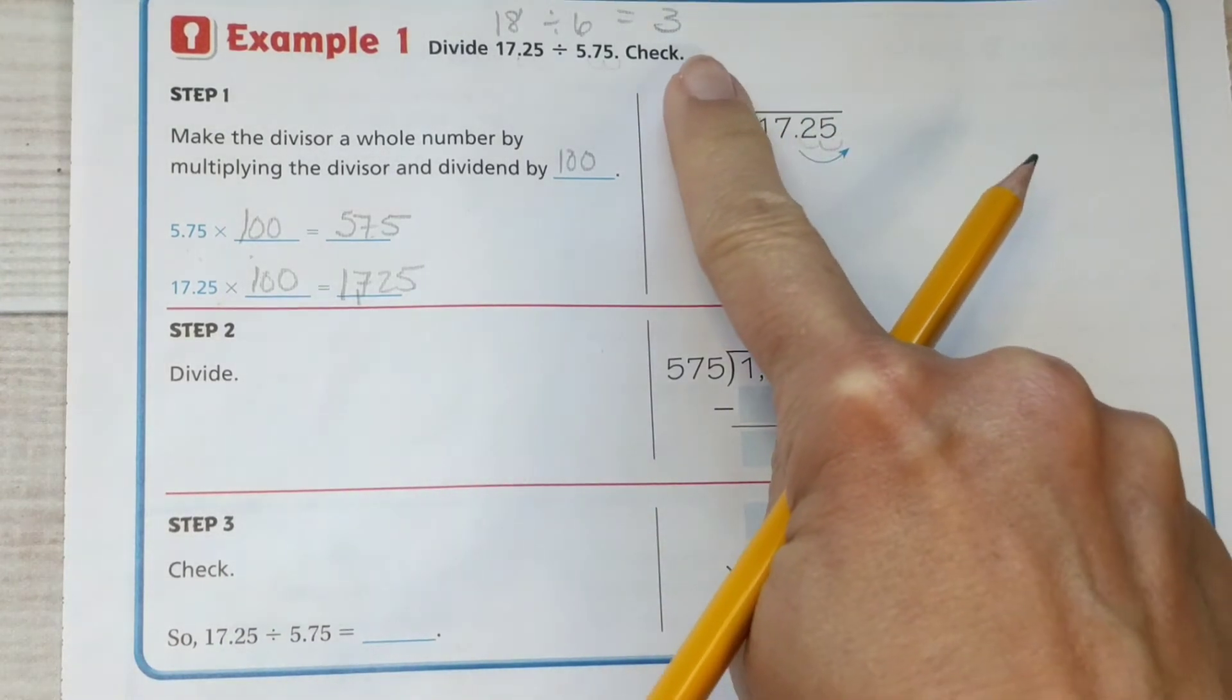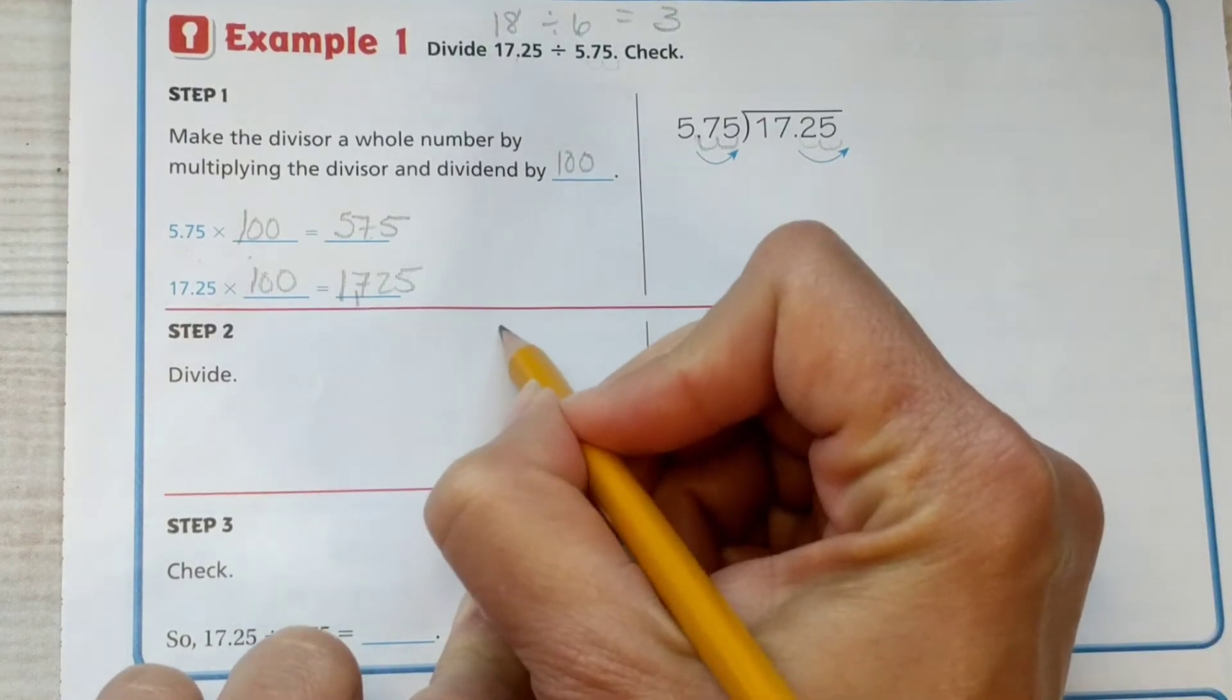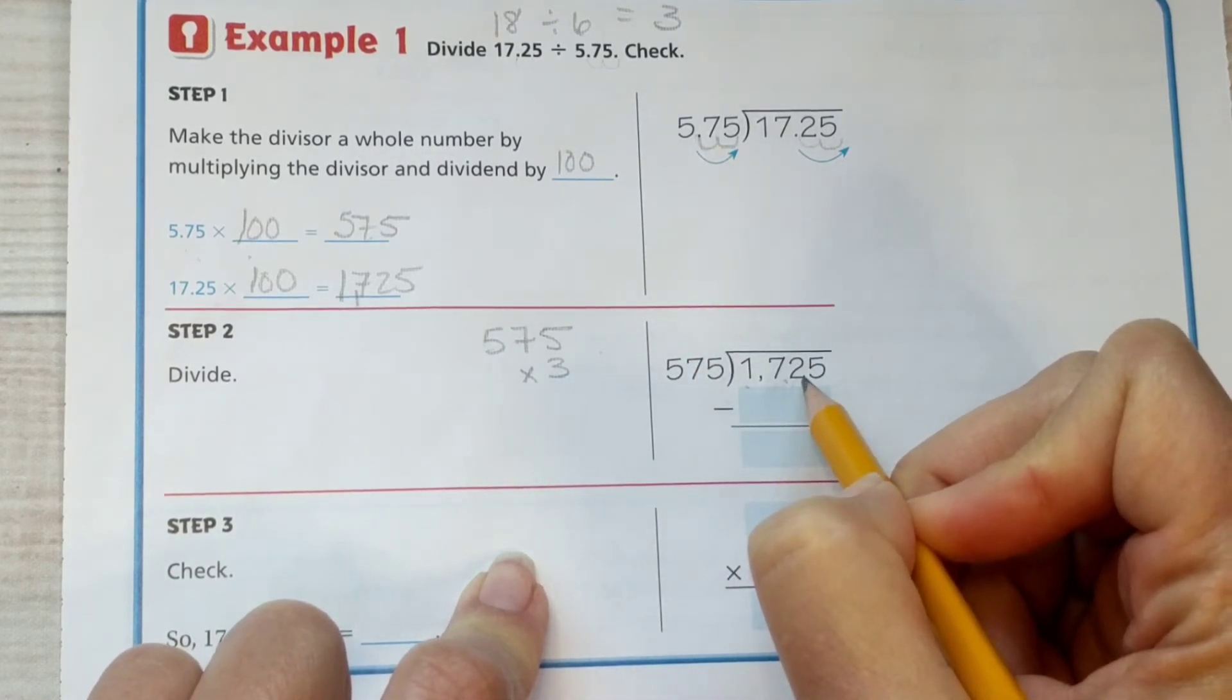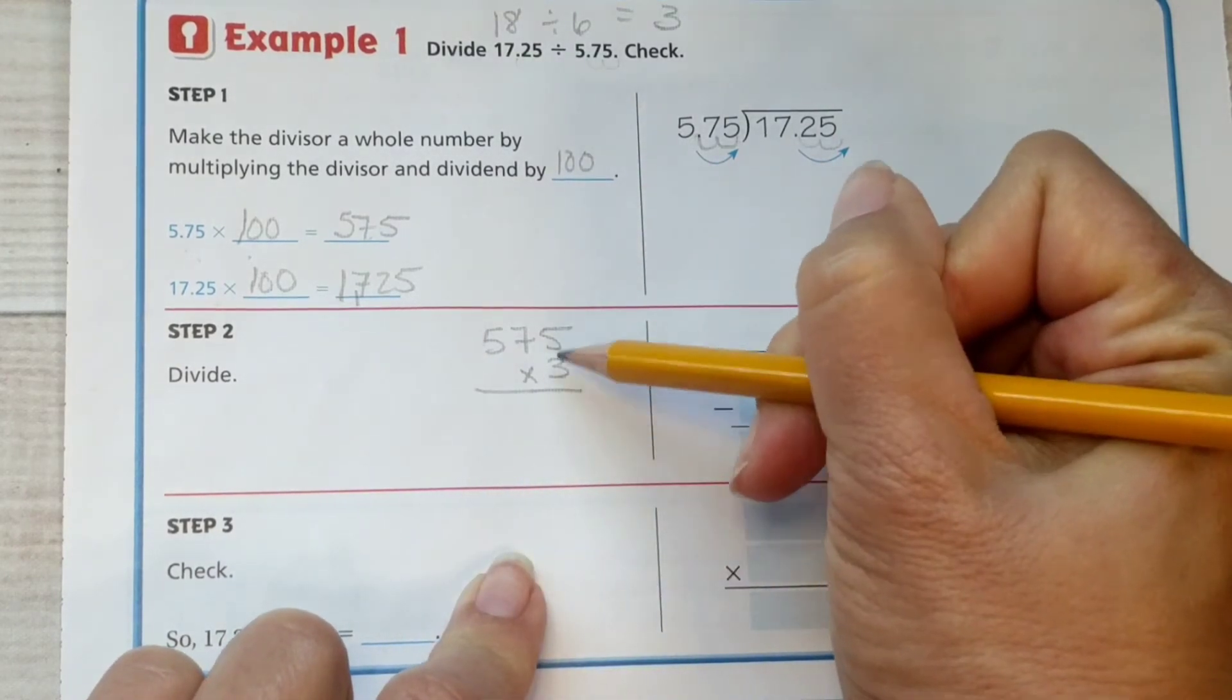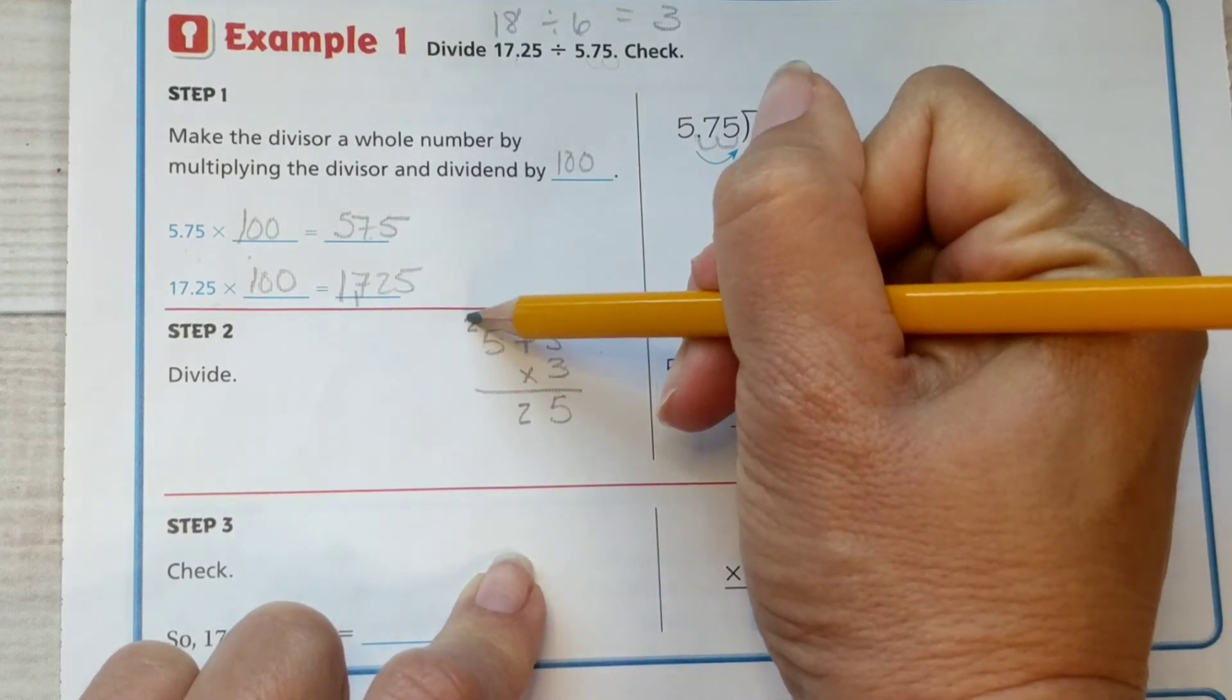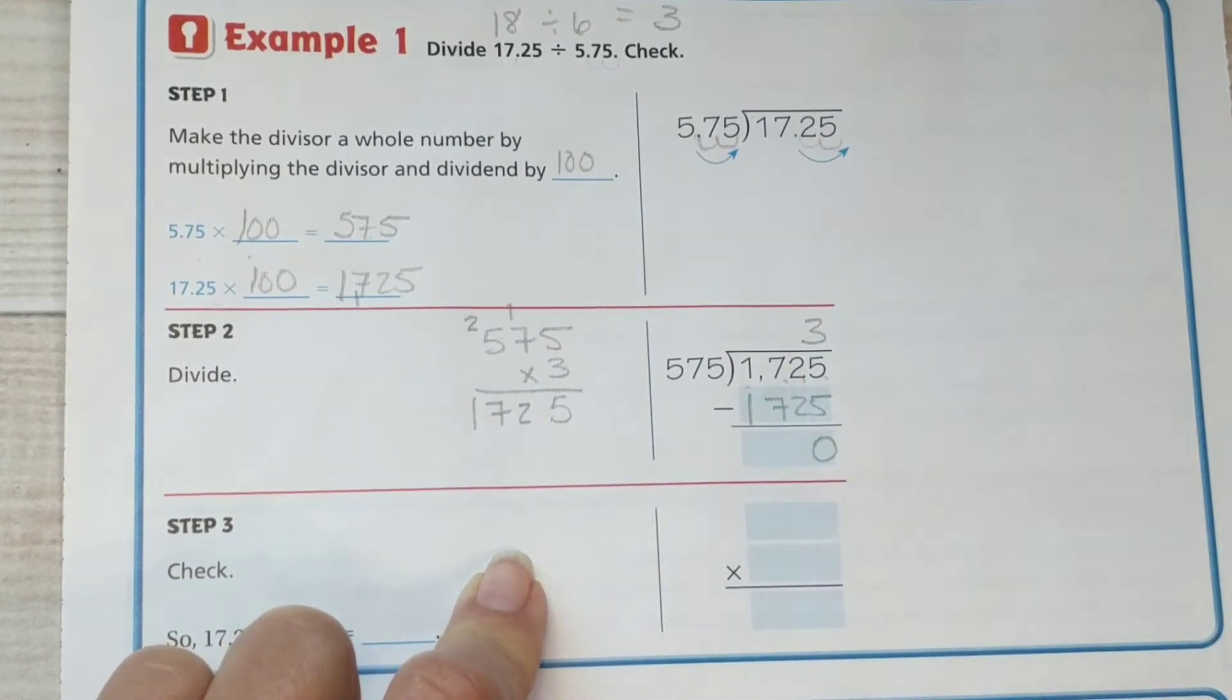We know our estimate is about 3, so that's going to help us get started because these are kind of big numbers. 575, let's try 3 just to get started to see if that's going to work. Times 3. It does not go into 1, it does not go into 17, it does not go into 172 even. It has to go all the way out to 1,725. So 3 times 5 is 15, regroup the 1. 3 times 7 is 21, plus 1 more is 22, regroup the 2. 3 times 5 is 15, plus 2 is 17. Look at that, they made it nice and even and easy for us. We subtract and we get 0.